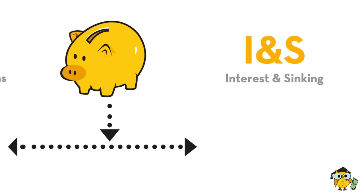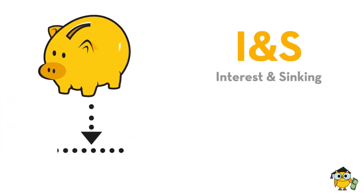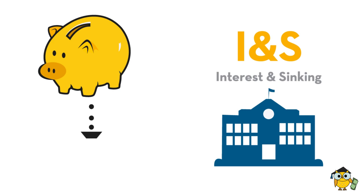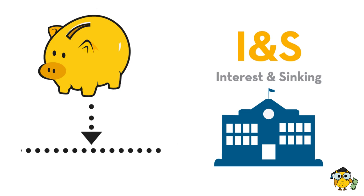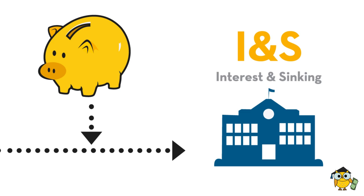The INS side can only be used to pay off bonds sold for construction and capital improvements to facilities. Bonds are also issued to buy furniture, equipment, and to purchase land. These are your long-term expenses paid for over a number of years. INS funds are used to pay off these bonds and cannot be used for operational costs such as payroll. The INS jar is filled only through local property taxes — the state does not contribute toward the payment of debt issued to build and maintain school facilities.